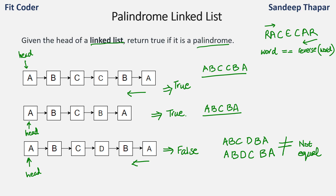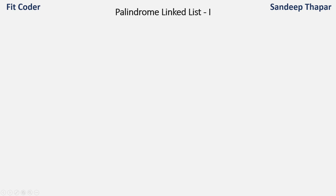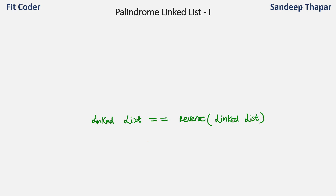We are given the head of a linked list and we have to find out whether it is a palindrome or not. There are various methods to solve this. In this video I will focus on two methods. For a linked list to be a palindrome, it should be equal to the reverse of the linked list. So if we find the reverse and compare it with the original, we can determine if it is a palindrome.